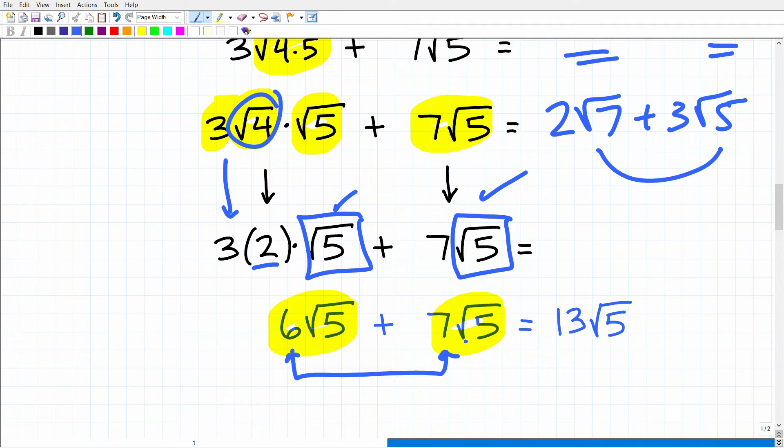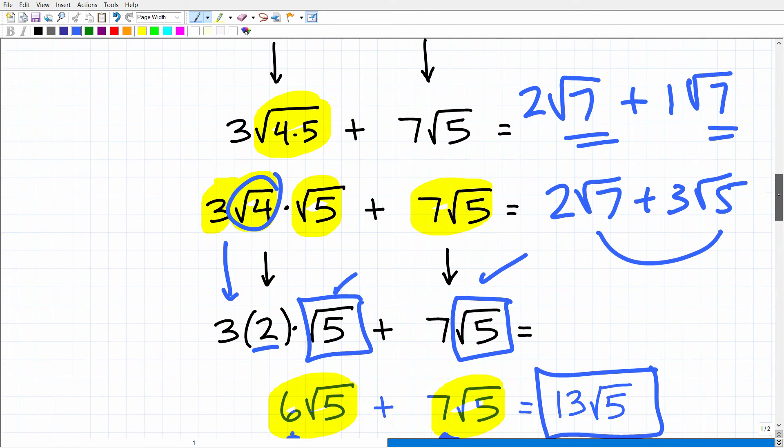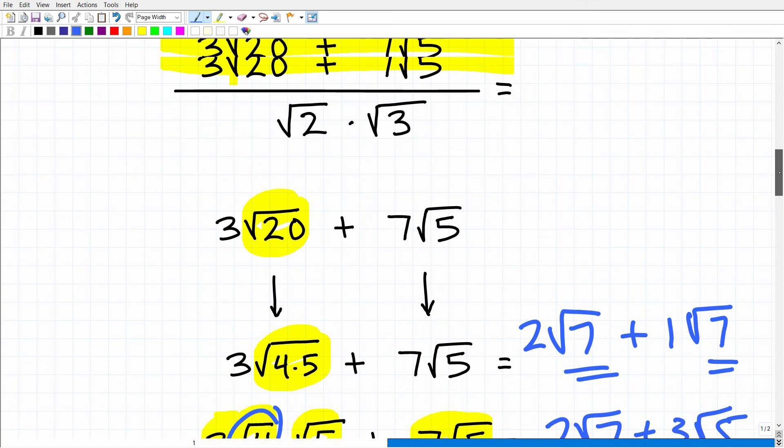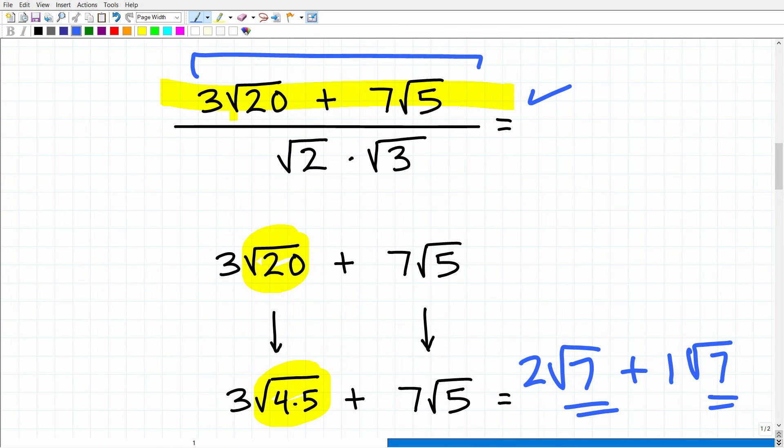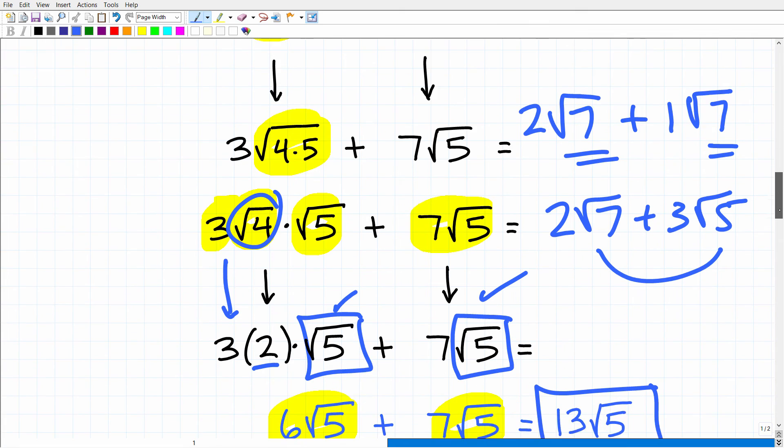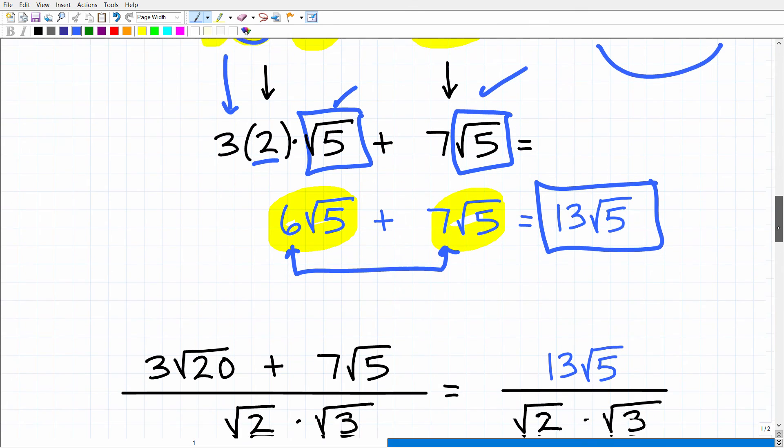So all we need to do is add the numbers in front of the square roots, kind of like the coefficients and like terms. So 6 plus 7, of course, is 13. So now we have 13 square root of 5. All right, so we just simplified the numerator. So now we have to work on the denominator. But we have a lot more steps to go. So let's go ahead and continue on.